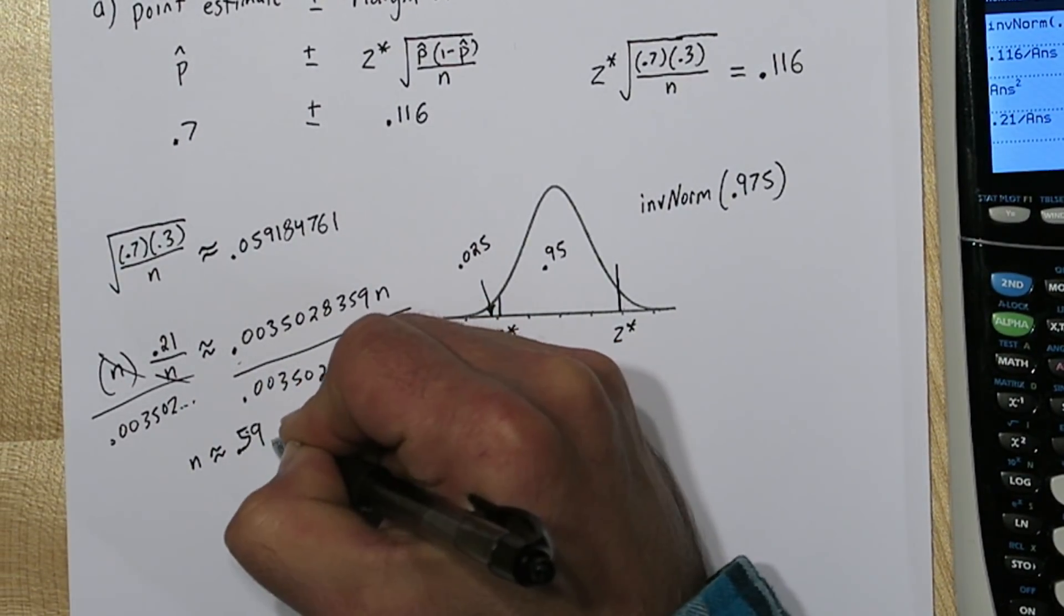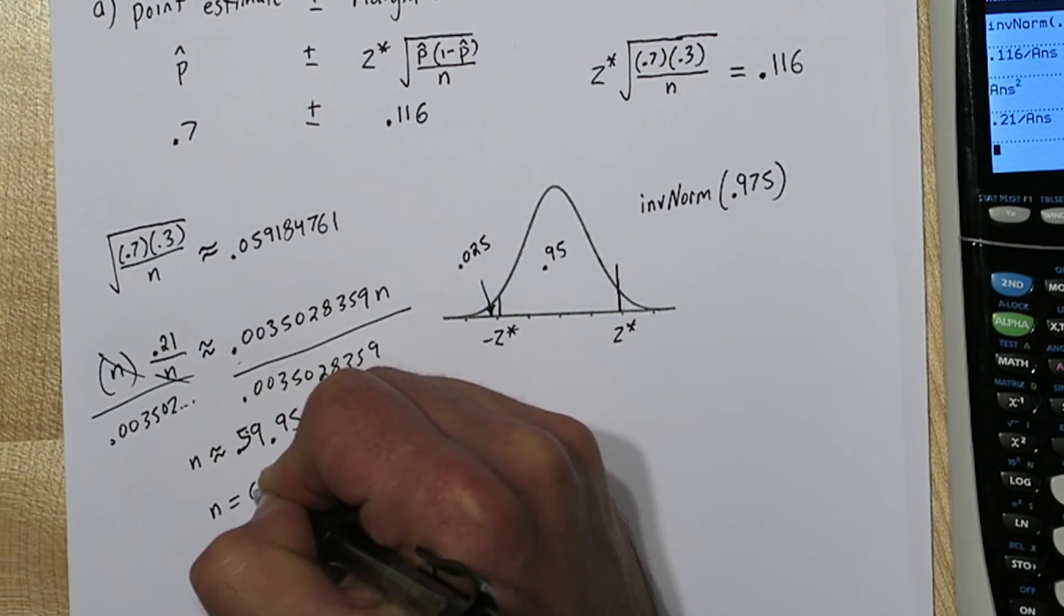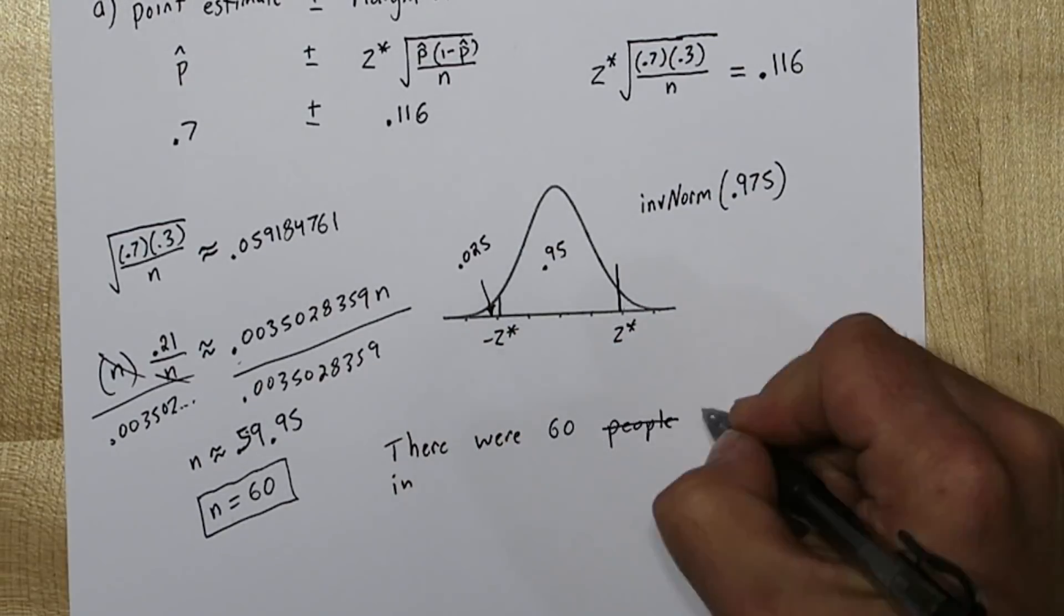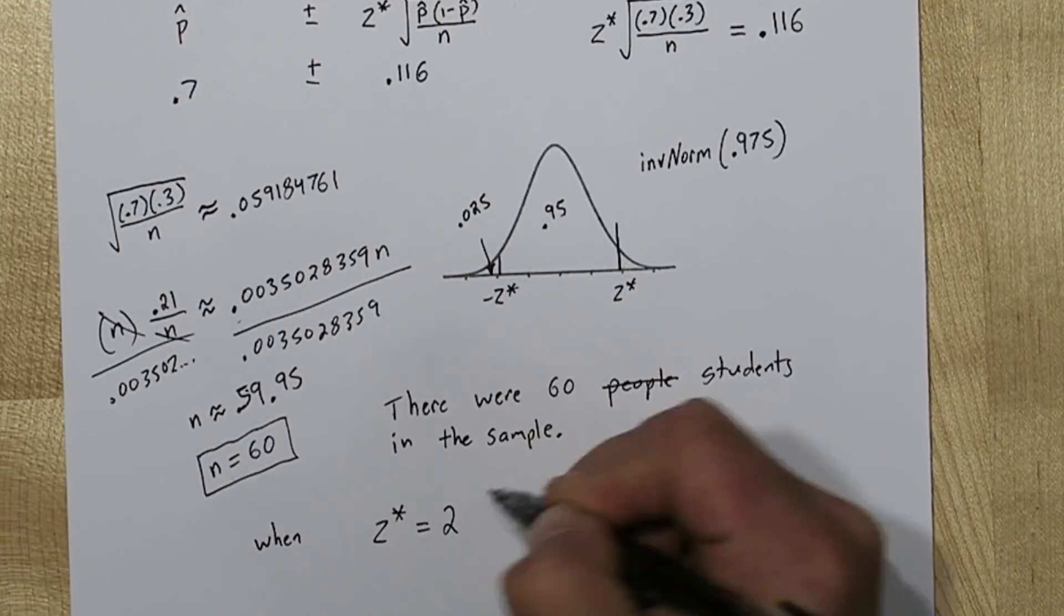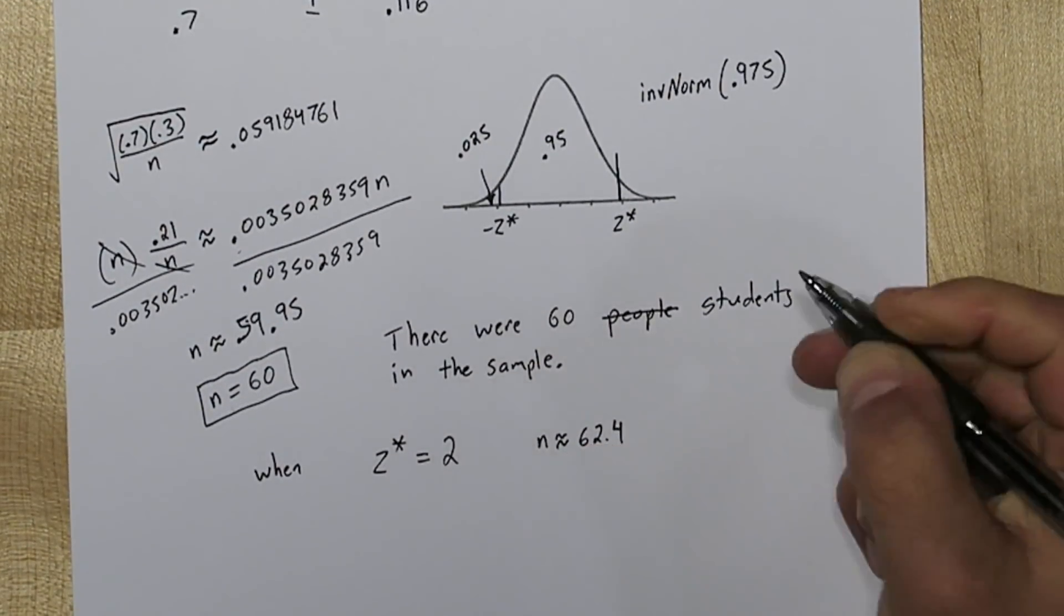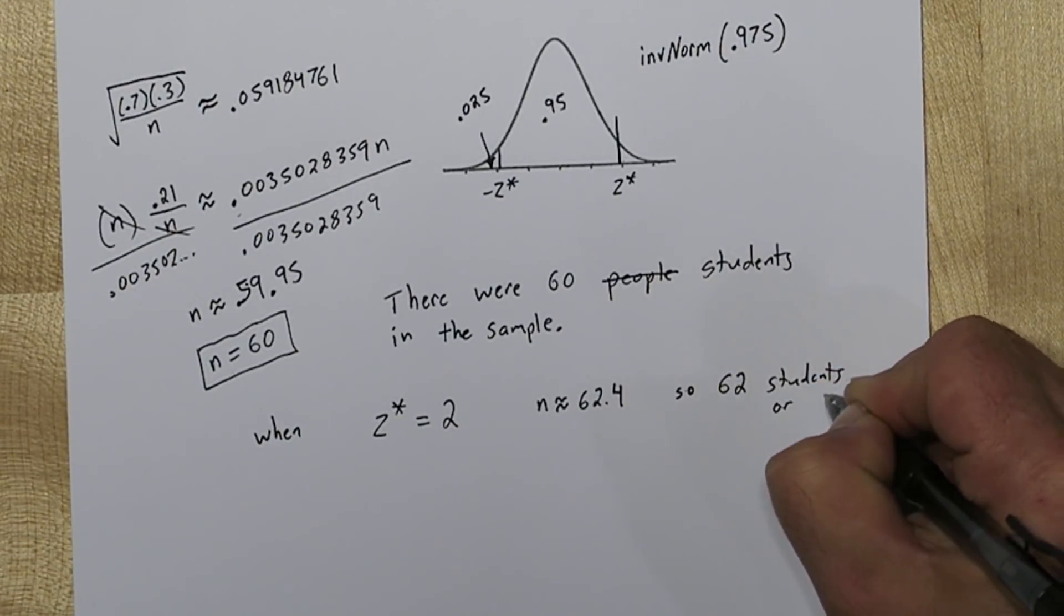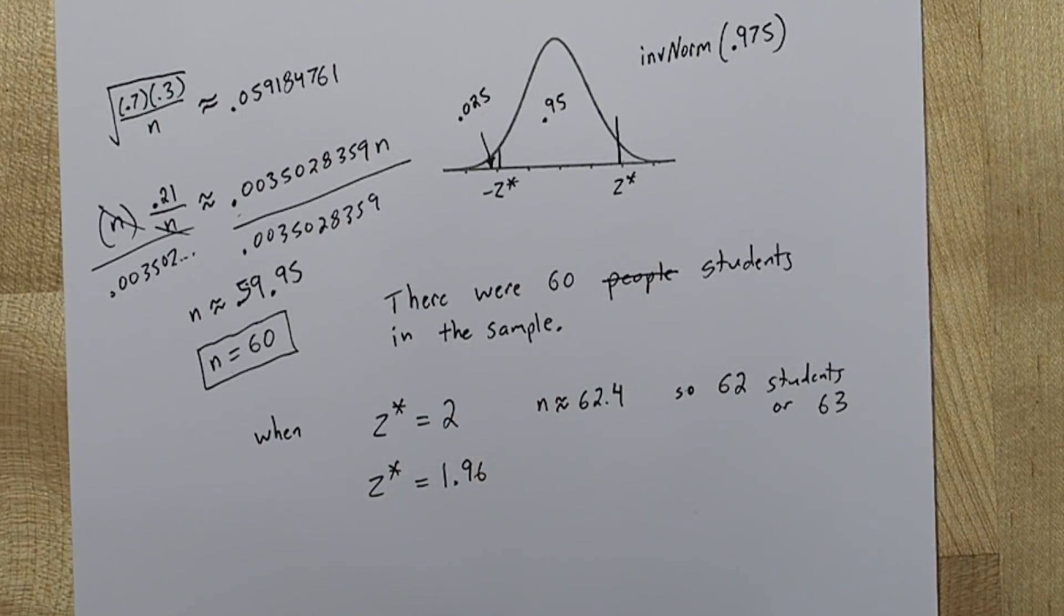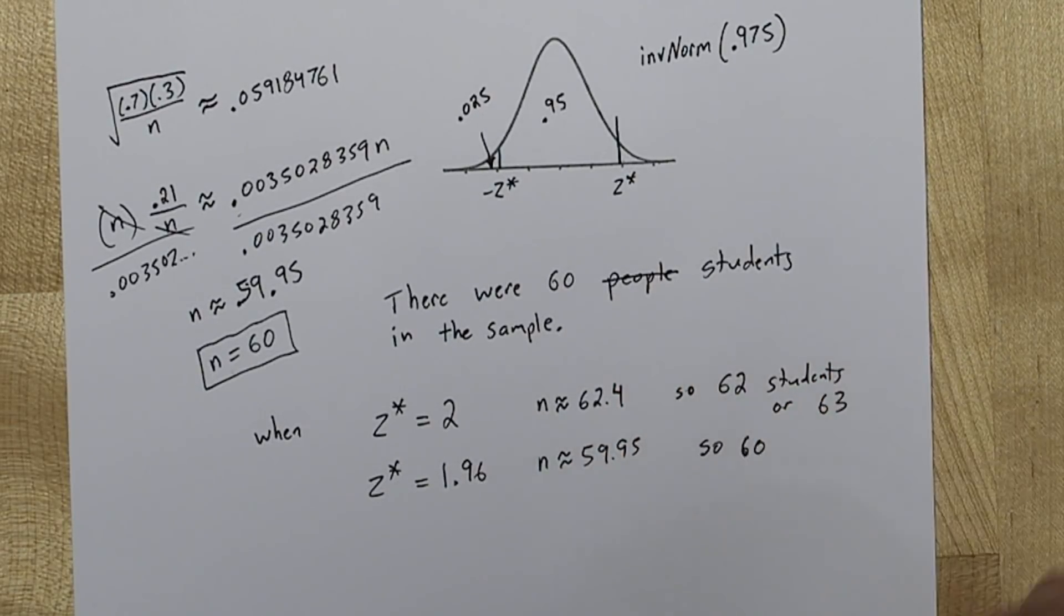And you end up with n is about equal to 59.95. Now I bet this original confidence interval is rounded to the thousandth place, so I bet the original sample size was actually 60 since you can't have that many people in a sample. So the final answer is there were 60 students in the sample. So I did the calculations for if you had z-star equal to 2, and you end up with an n of about 62.4. If you used z-star as 1.96, you get 59.95 again, so you'd get the same answer, 60 students.